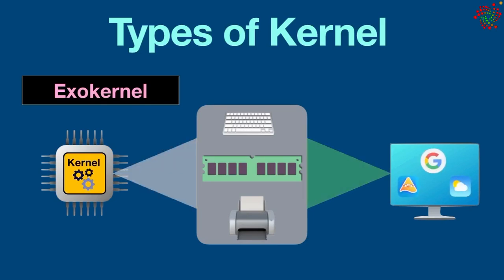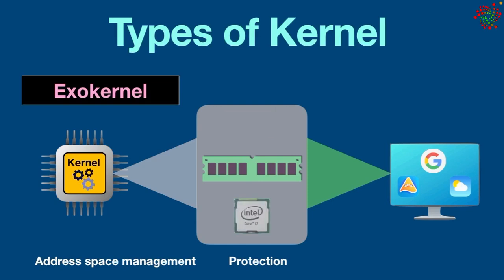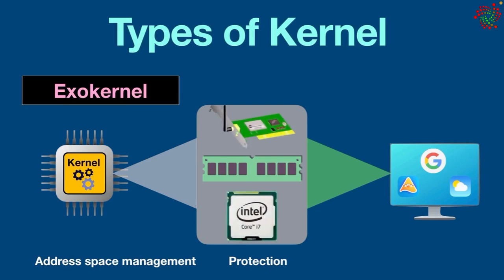Exo kernel: it's an operating system architecture that exposes hardware resources directly to user-level applications while providing minimal services such as address space management and protection. It allows user-level applications to directly control hardware resources such as CPU, memory, and network interfaces. Examples are the Exokernel operating system, Nemesis, and SPIN.